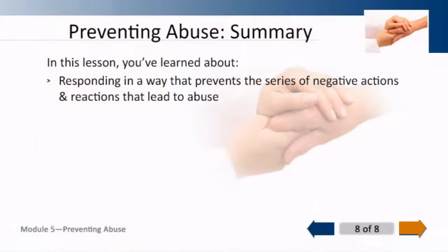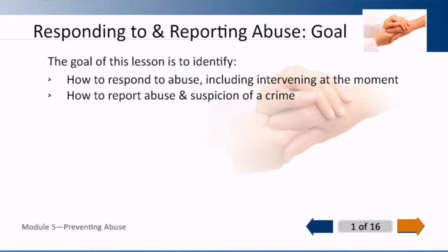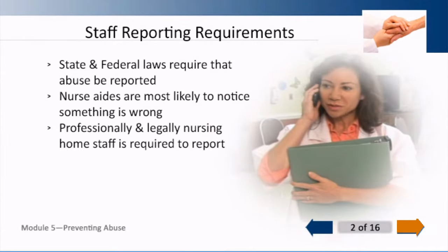This time we have learned about responding in a way that prevents the series of negative actions that can lead to abuse. Now: responding to and reporting abuse. The goal here is to identify how to respond to abuse, including intervening at the moment, getting the person safe, and how to report abuse and suspicion of a crime. State and federal laws require that abuse must be reported by any of you. There is a specific list of people — anybody that works in the healthcare industry is included in that list. If you are a mandated reporter, you must report. If you saw that abuse happened, you have to report that. Even if you think it happened, you report it and then you tell somebody so the investigation can start. Nurse aides are the most likely to notice that the elder may be showing signs of abuse.